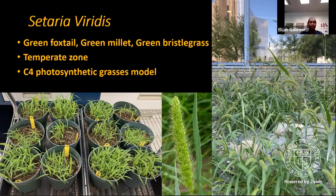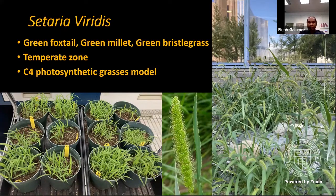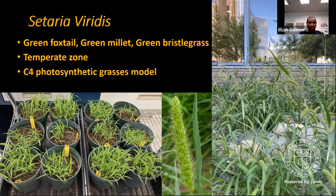So what's Setaria viridis? Setaria viridis, more commonly known by several names such as green foxtail, green millet, and green bristlegrass, is a temperate pervasive grass that many people would consider just another weed. You were probably just a few meters away from some while outside eating lunch without even realizing it. Our project uses Setaria because it's an excellent model for C4 photosynthetic grasses like maize and sugarcane, and it has a well-sequenced genome that is easier to modify, for example through gene over-expressions as done in this project.